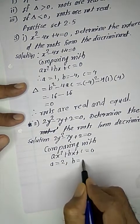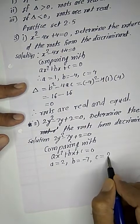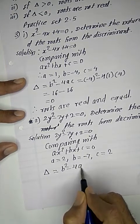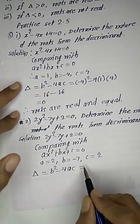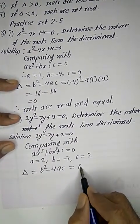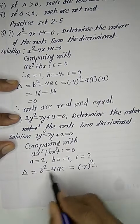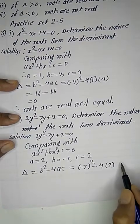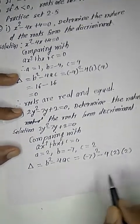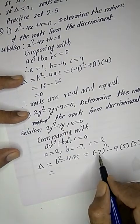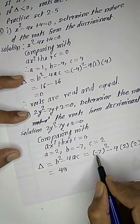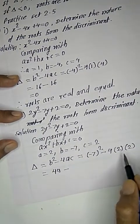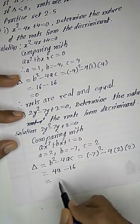The standard equation's coefficient a is equal to 2, b is equal to -7, and c is equal to 2. Delta is equal to b² - 4ac = (-7)² - 4(2)(2).